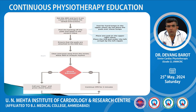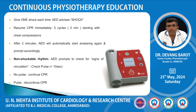If no shock is advised, continue CPR for two minutes. Give one shock each time the AED advises a shock. Resume CPR immediately — five cycles starting with chest compression. After two minutes, the AED will automatically start analyzing again and prompt accordingly. If a non-shockable rhythm is detected, the AED prompts to check for signs of circulation and check pulse. No pulse — continue CPR. If pulse is present, discontinue CPR and call for EMS.